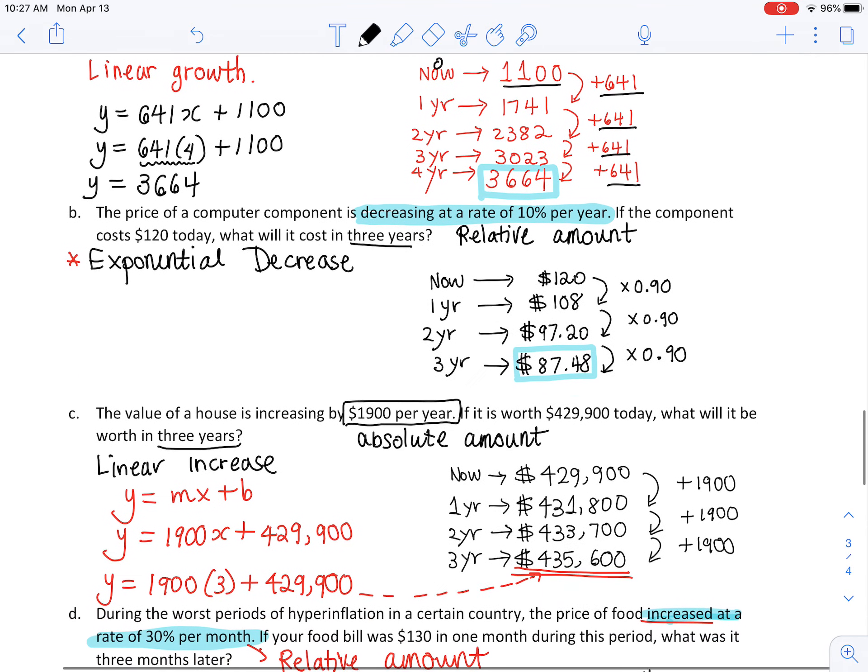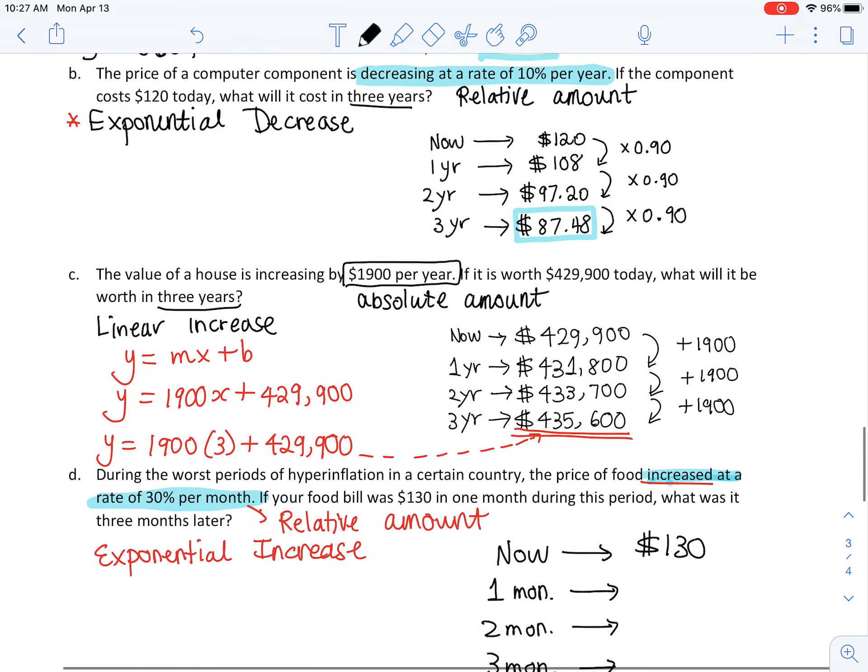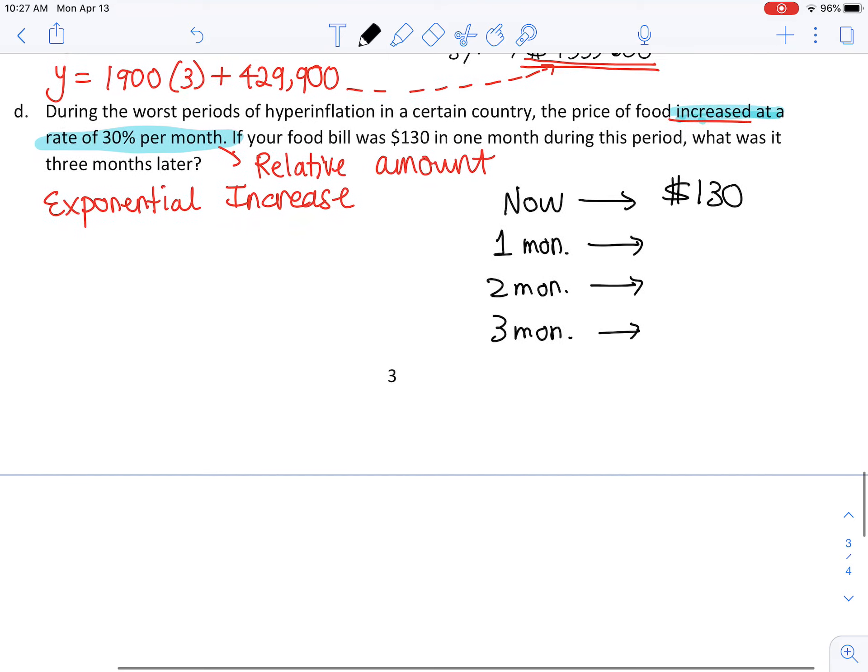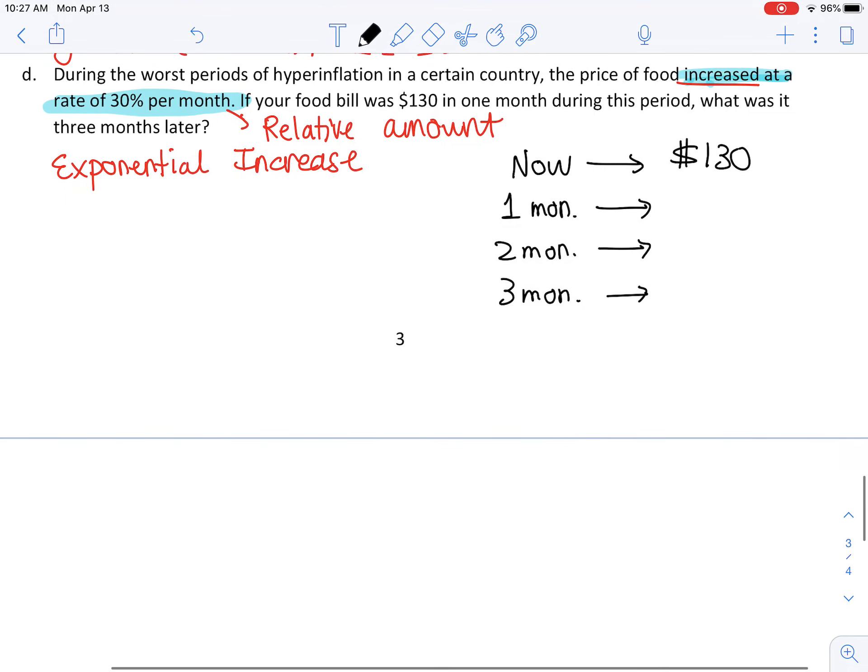But remember, for exponential increase or decrease we're going up by the same relative amount, so we're going to have to multiply the previous one. When I was decreasing by 10% per year, I multiply by 90% to get to the next part because 100 minus 10% is 90%. But look, I'm increasing at a rate of 30%. We're going to have that original 100% but an additional 30%, so if you add them you're going to get 130%, and 130% in decimal is 1.3.